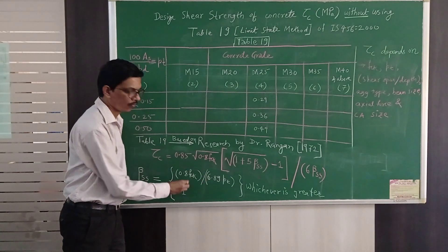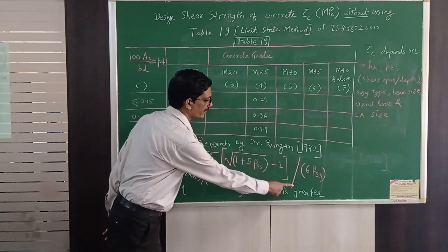So suppose this value is 0.9. Then out of 0.9 and 1, 1 is greater. Whichever is greater, so I will adopt 1.